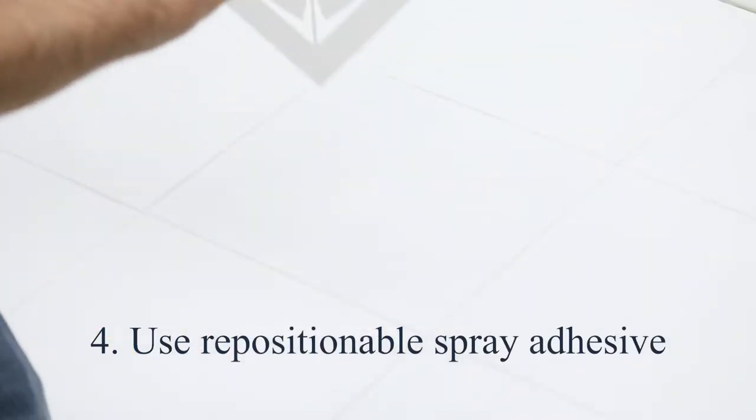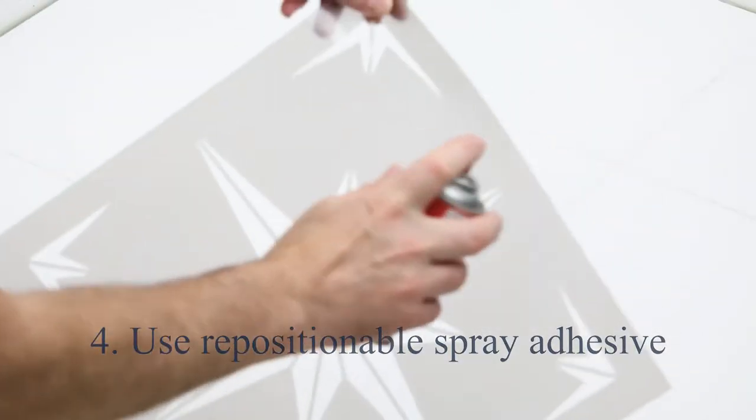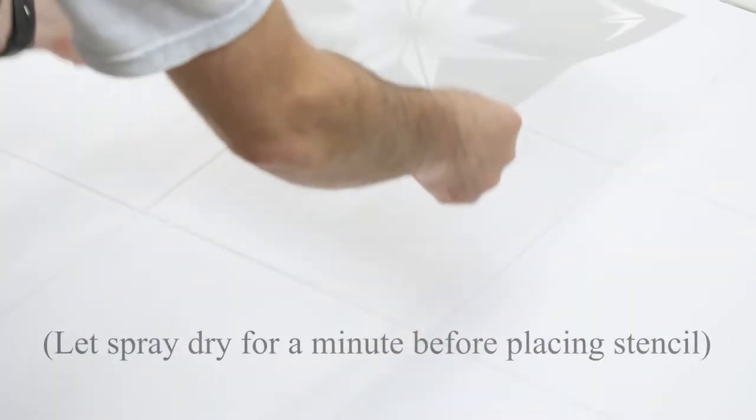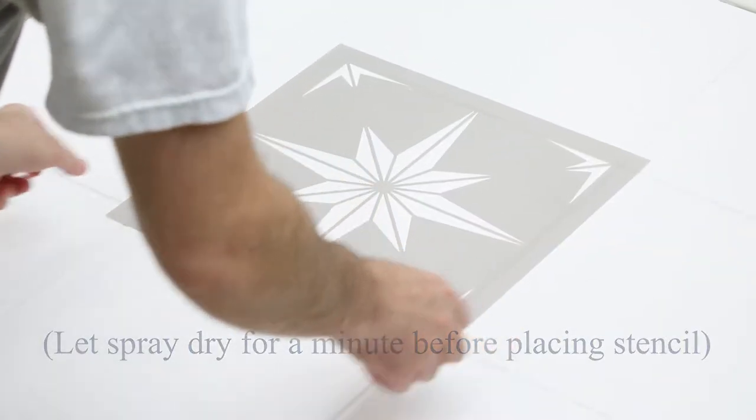After the paint is dried, spray one side of the stencil with repositionable spray adhesive and then place the sticky side down onto the first tile.